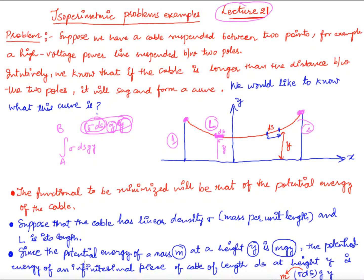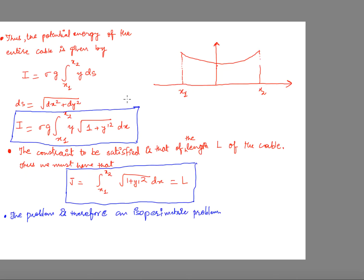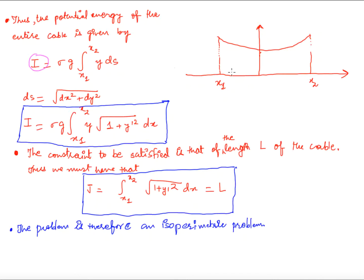Sigma and g are constants, so they come out, and we have the integral from x1 to x2 of y·ds. Now ds equals the square root of dx² + dy², so replacing ds and taking dx out, I have the integral of y·sqrt(1 + y'²)·dx. This is the functional I that I have to minimize.